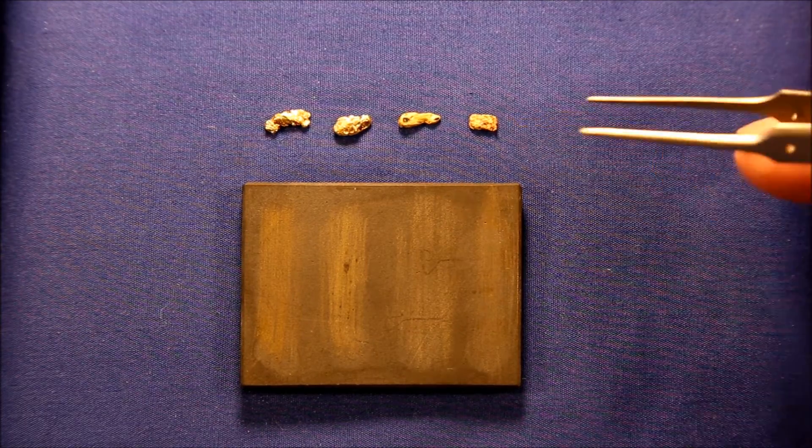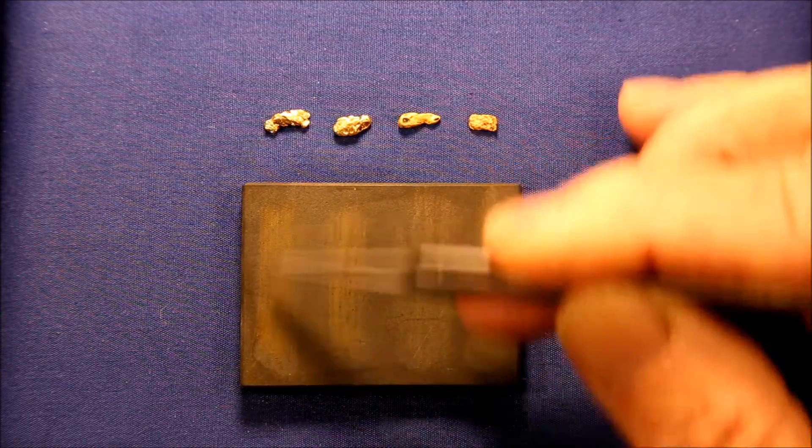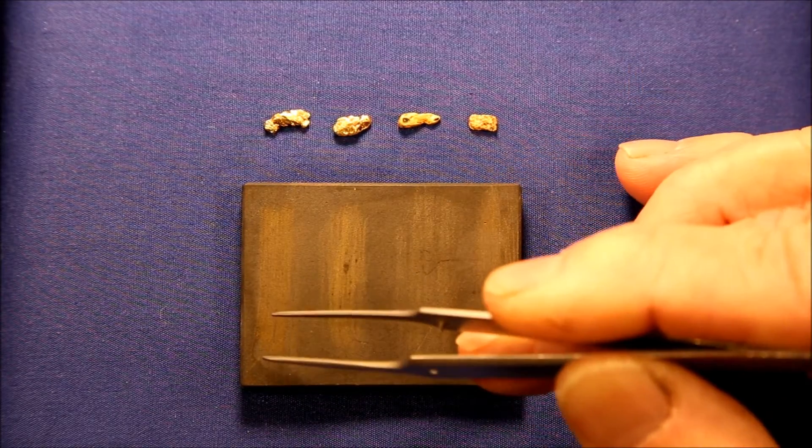The first thing to do is to rub each piece of gold to create a streak on the black stone. This is the surface that will be tested.